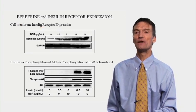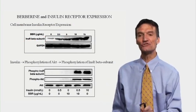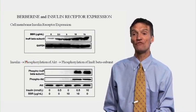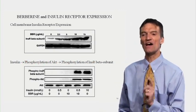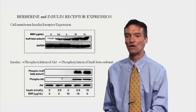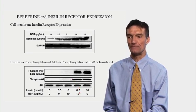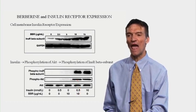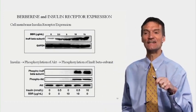Looking at cell membrane insulin receptor expression: the insulin receptor beta subunit increases with berberine. Insulin leads to activation of its receptor, tyrosine phosphorylation of AKT, and phosphorylation of the insulin receptor beta subunit. With low-dose insulin, you can barely see anything happening. With berberine there's some phosphorylation, but there's a very nice synergy between insulin and berberine. Very low-dose insulin in the presence of berberine is just as physiologically active as high-dose insulin alone. Berberine enhances insulin sensitivity and insulin signaling.